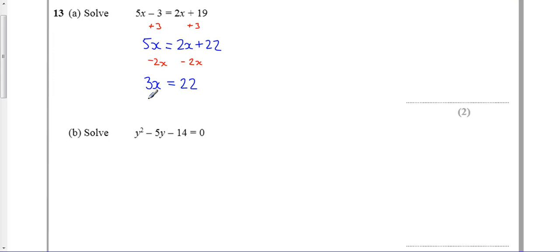And then my final step is, I just want x, so I'm going to divide by 3. And that gives me x is 22 divided by 3, which is acceptable as an answer. If you wanted to rewrite as a mixed number, we know that x is therefore 7 with 1 third left over.